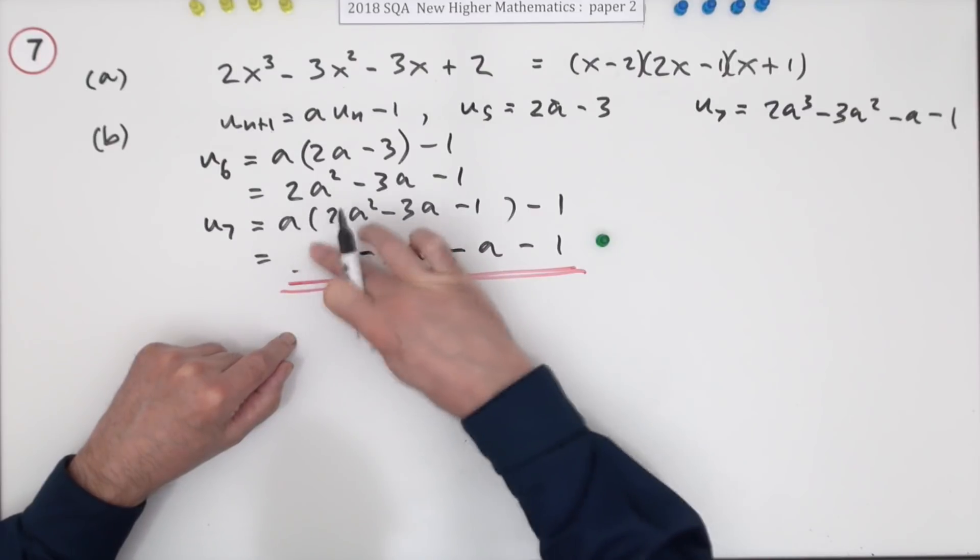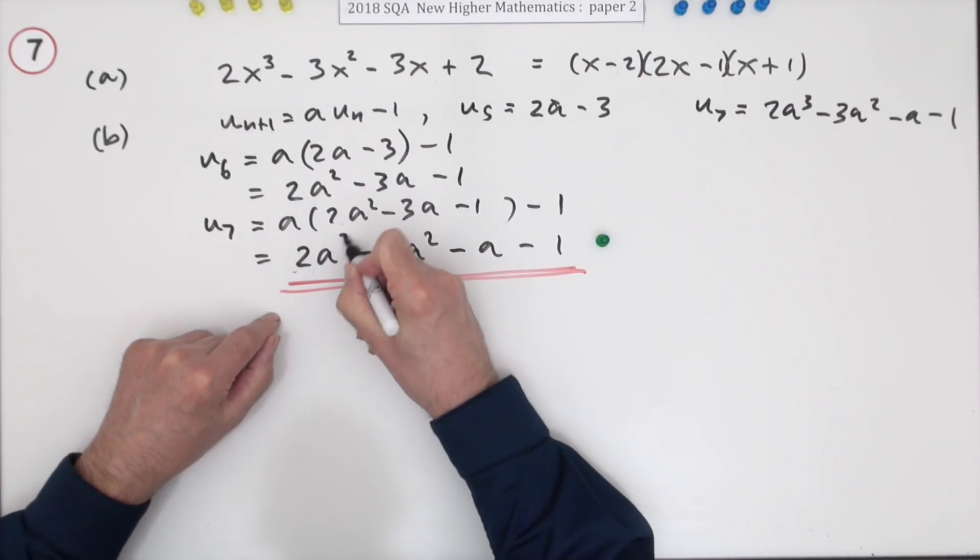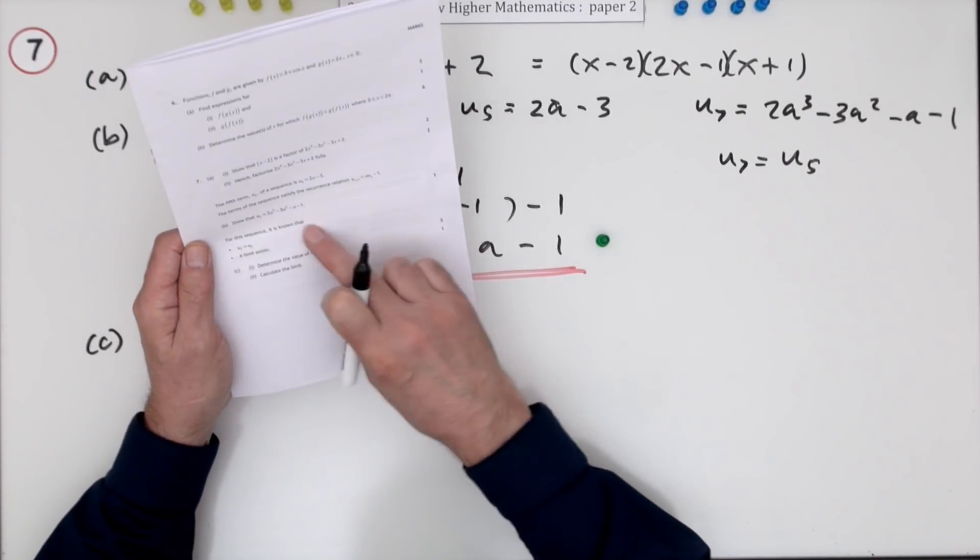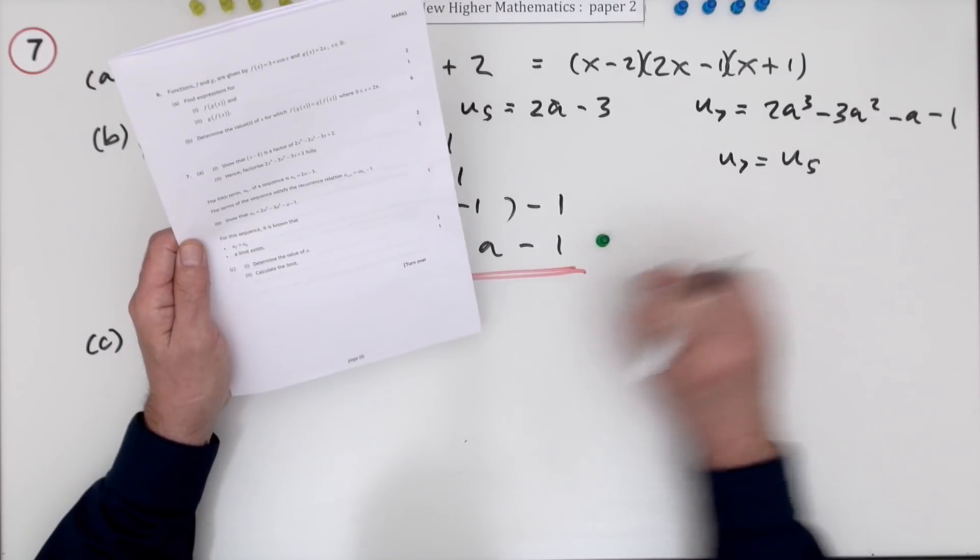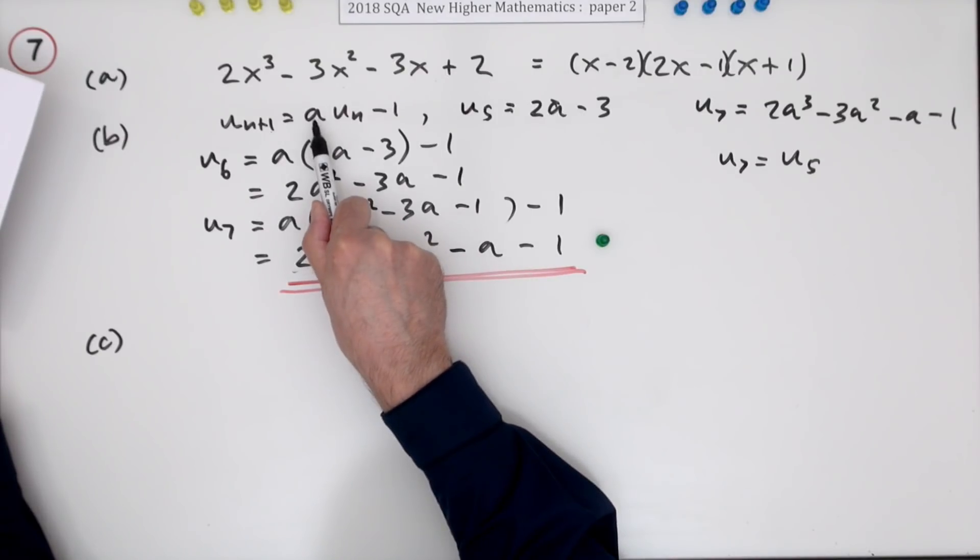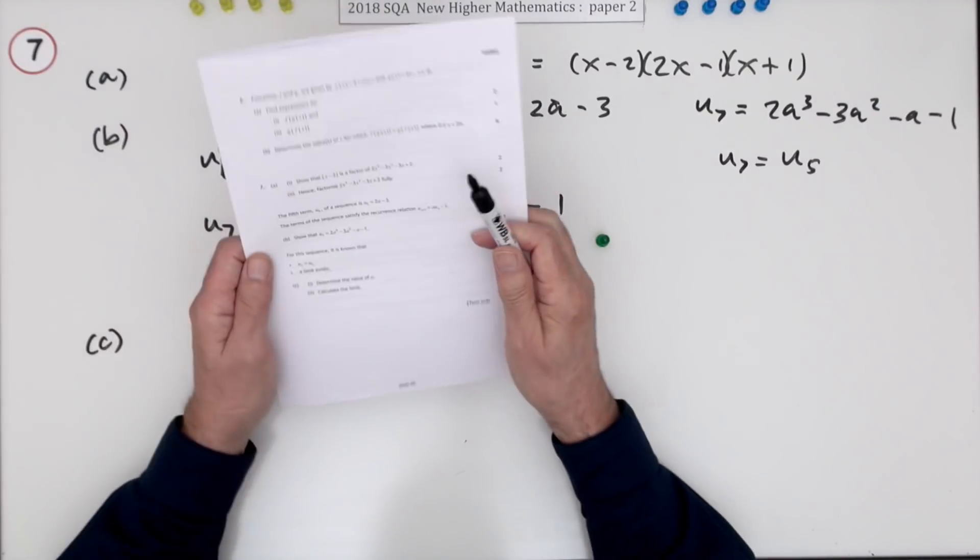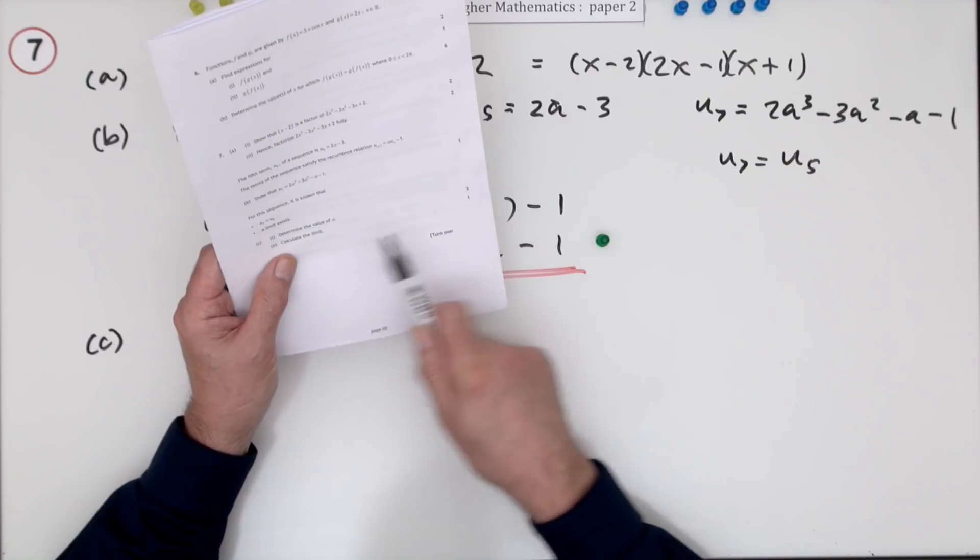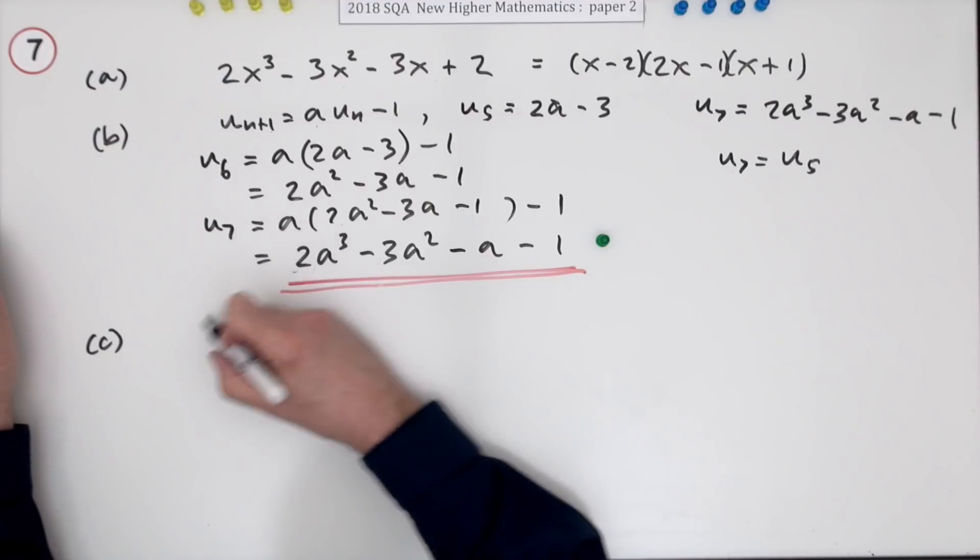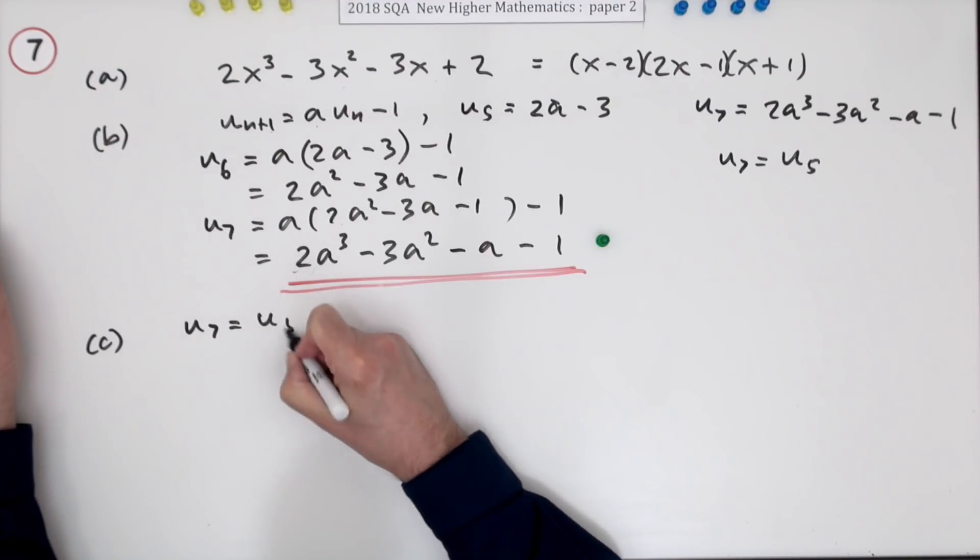That's all a wee bit of a mess there isn't it? Now part c. Final four marks. For this sequence it's known that u7 is equal to u5 and also that a limit exists. Well if a limit exists it means that multiplying number there that factor must be a proper fraction between 1 and negative 1. And that's the first thing you have to do for three marks. Find that value of a and the second part find the limit. Well you have to use this.